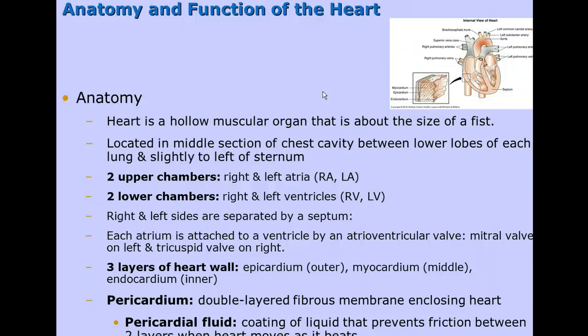The upper chambers are the atria and the lower chambers are the ventricles. The right and left sides of the heart are separated by a septum, and each atrium is attached to a ventricle by an atrioventricular valve — a mitral valve on the left and a tricuspid valve on the right.